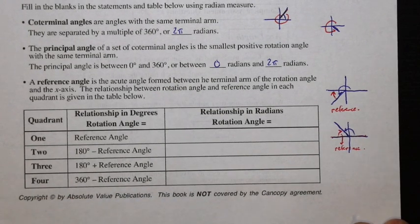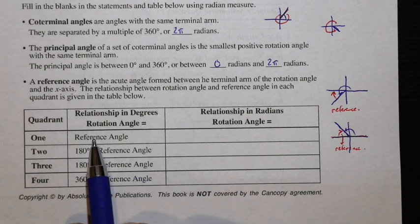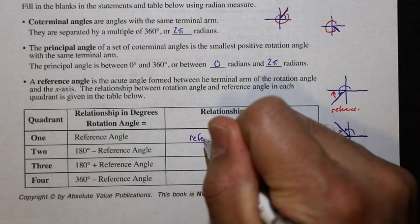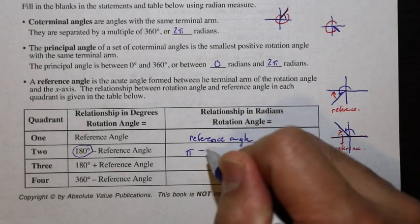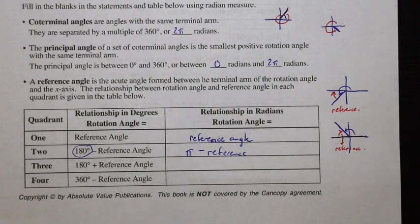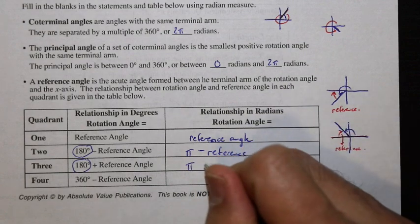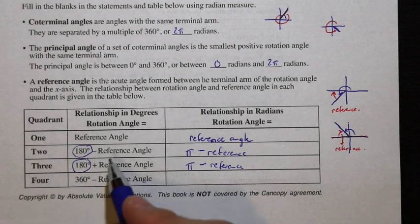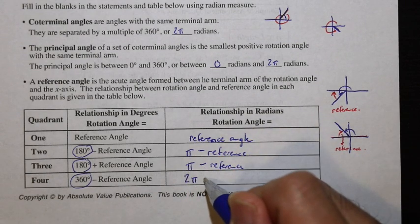Depending on which quadrant you're in, there's a different calculation for finding the reference angle. Looking at this table with relationships in radians: in quadrant 1, the rotation angle equals the reference angle. In quadrant 2, π minus the reference angle gives the principal angle. In quadrant 3, it's π plus the reference angle. And in quadrant 4, since 2π is the full circle, it's 2π minus the reference angle.